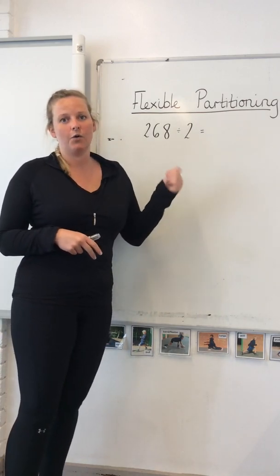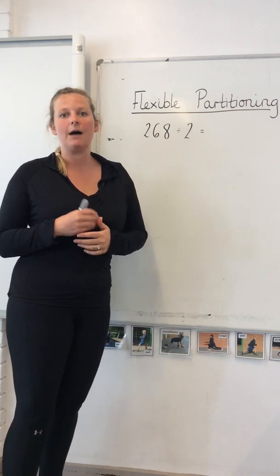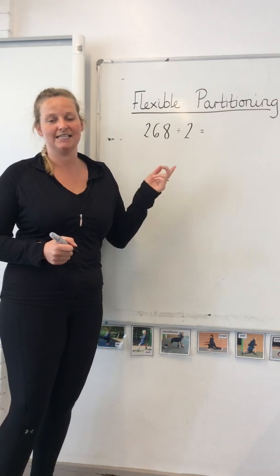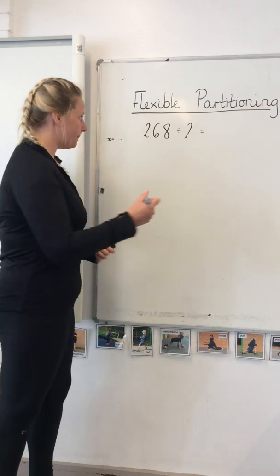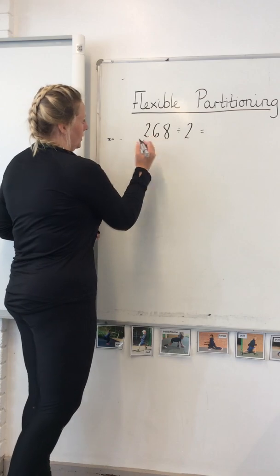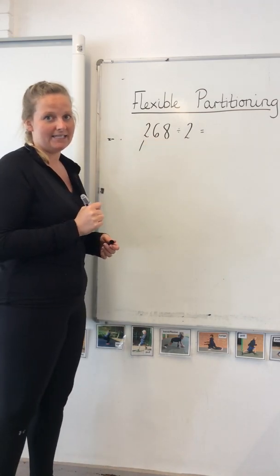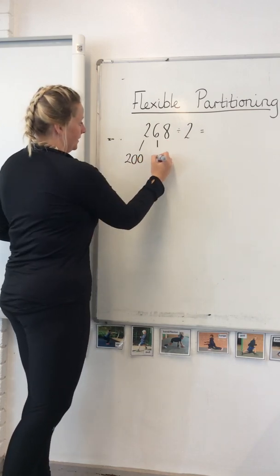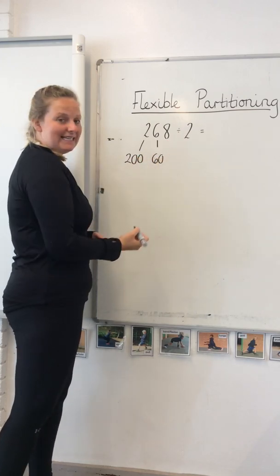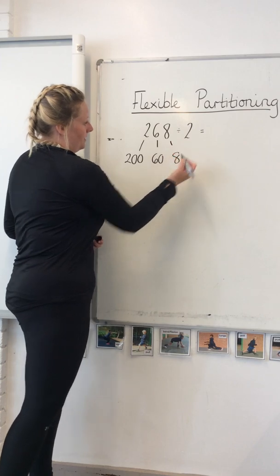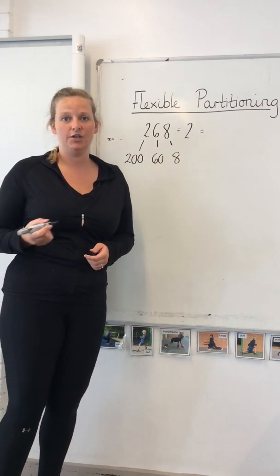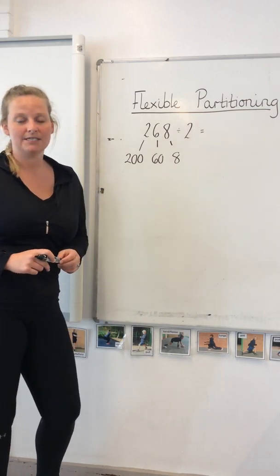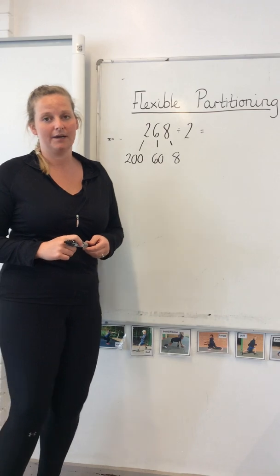I'm going to start with a question that just requires our normal partitioning. So if I took the question 268 divided by 2, we can partition 268 into 260 and 8. That means we've used our place value knowledge — our hundreds, our tens and our ones. That then makes the number slightly easier to be able to divide by 2.